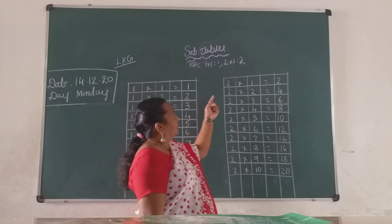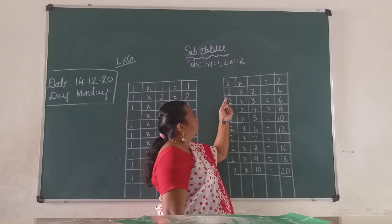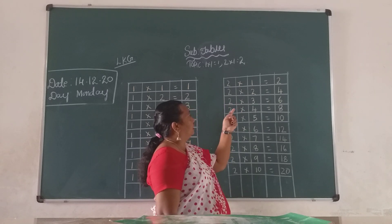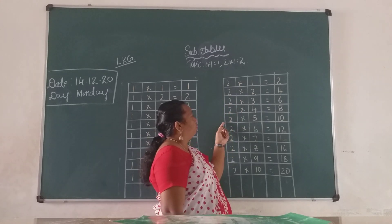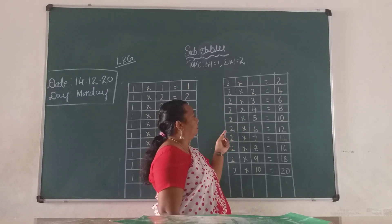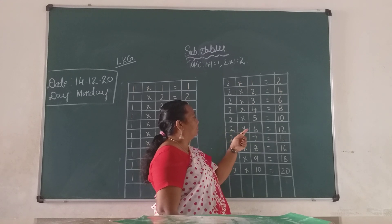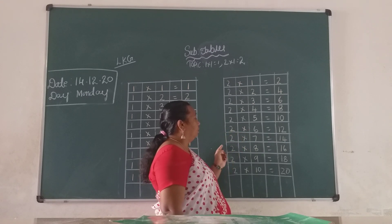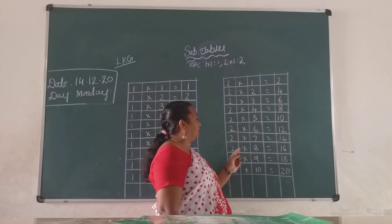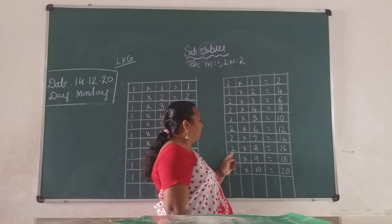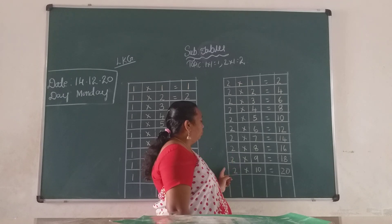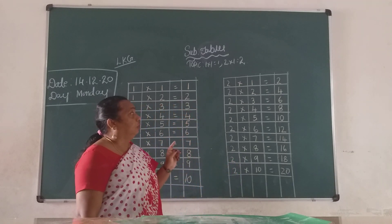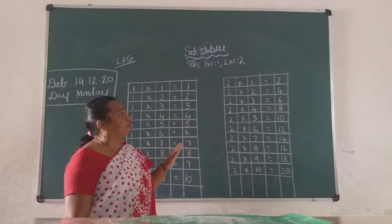Two ones are two. Two twos are four. Two threes are six. Two fours are eight. Two fives are ten. Two sixes are twelve. Two sevens are fourteen. Two eights are sixteen. Two nines are eighteen. Two tens are twenty. I will give you a comment through the WhatsApp group.